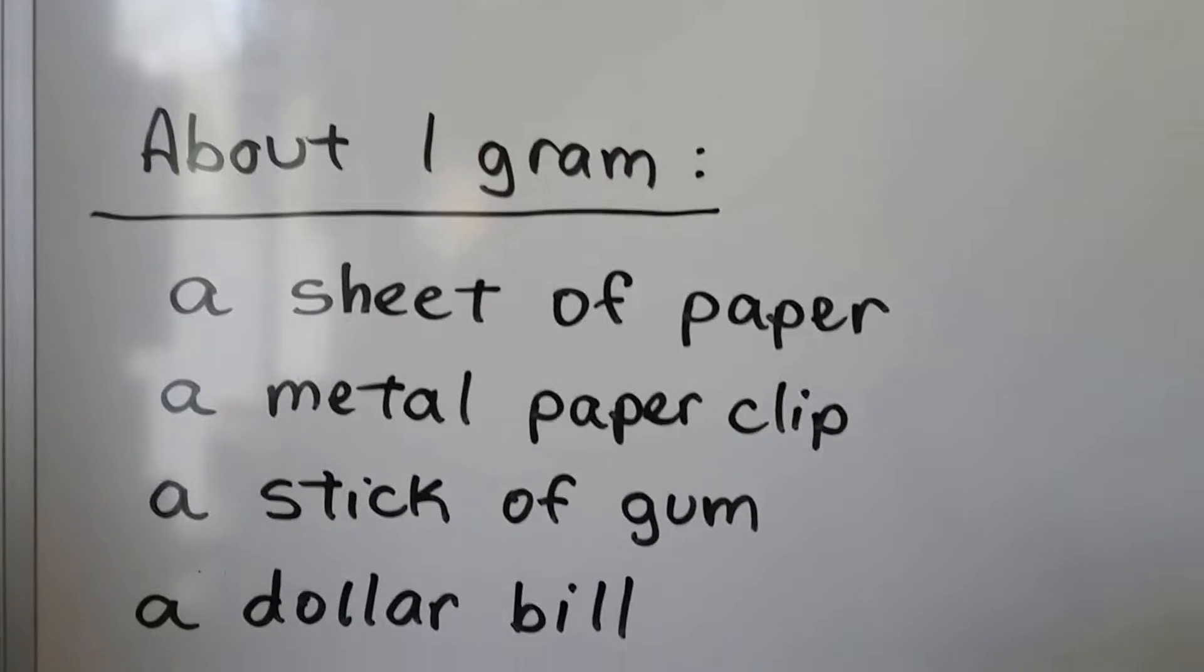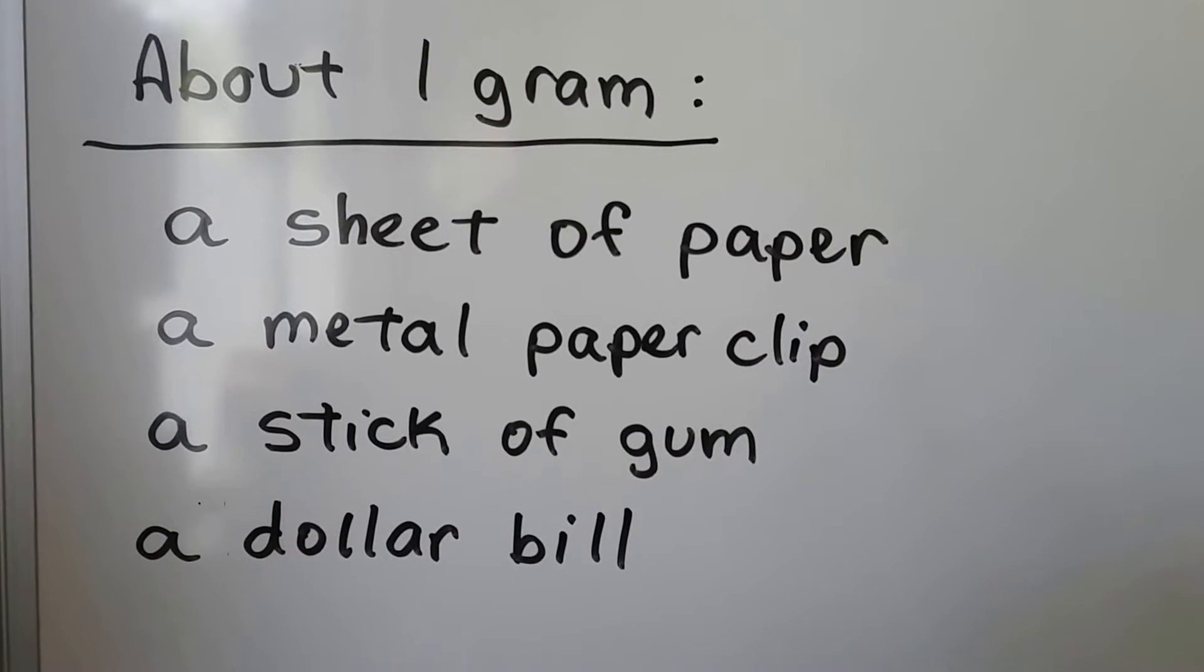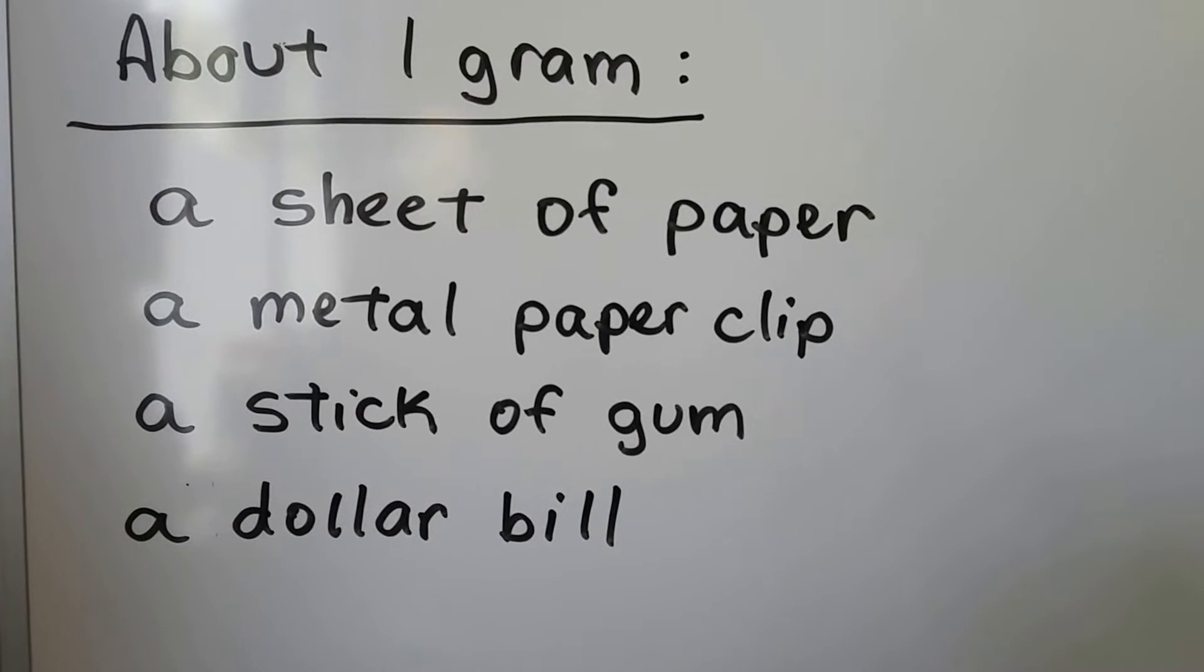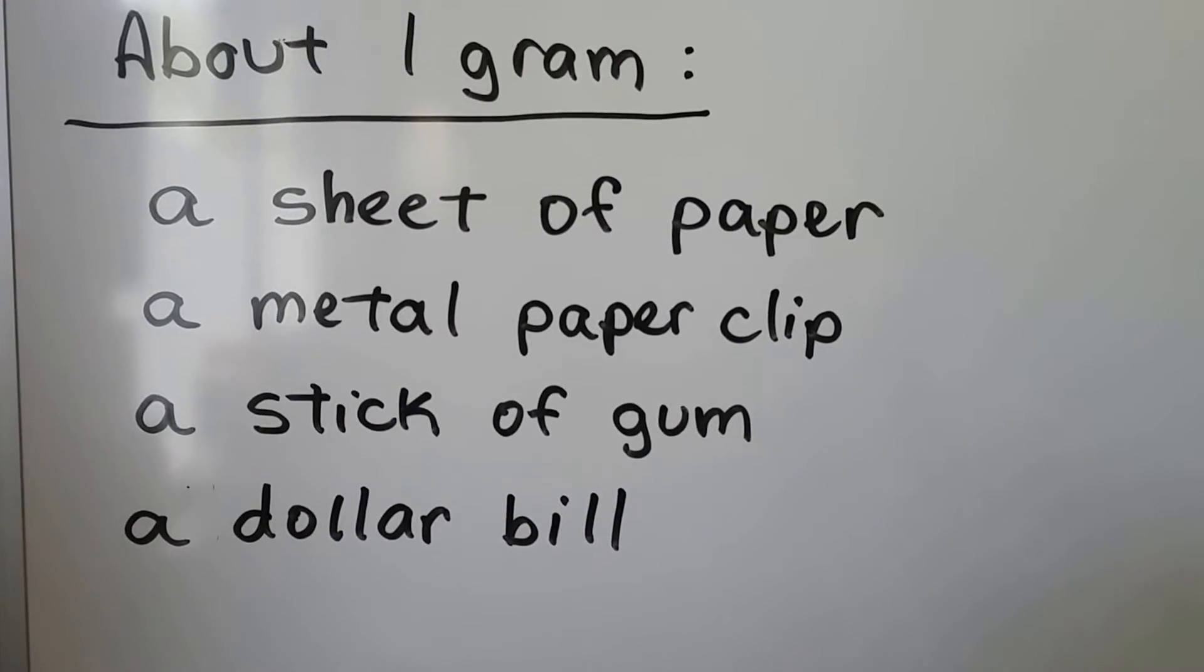Here's a list of things that weigh about one gram: a sheet of paper, a metal paper clip, a stick of gum, a dollar bill. Each of these things weighs about one gram. So that's not very heavy, is it?